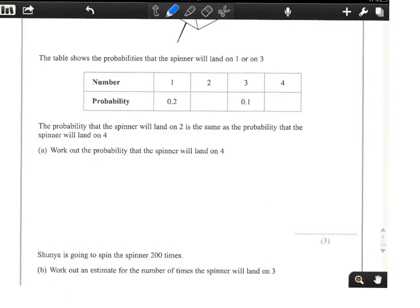We've been provided with a table of information showing us that the probability a 1 comes up is 0.2, a 3 comes up is 0.1, and most importantly, the probability the spinner will land on 2 is the same as the probability it will land on 4.